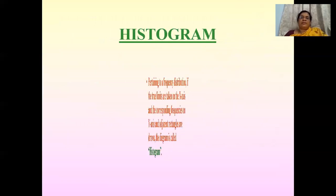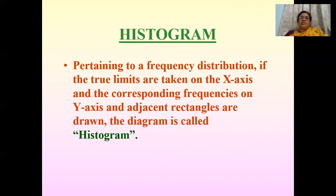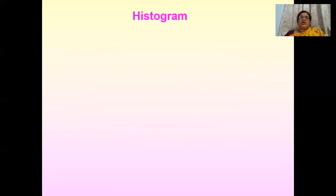Now let us work out the histogram. What is meant by a histogram? A histogram pertains to a frequency distribution: if the true class limits are taken on the x-axis and corresponding frequencies on the y-axis, and adjacent rectangles are drawn, the resulting diagram is called a histogram. We have already prepared the frequency distribution table, and for that table we will now prepare a histogram.